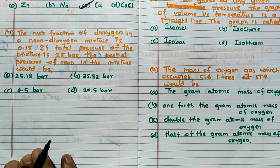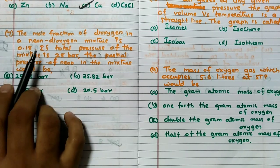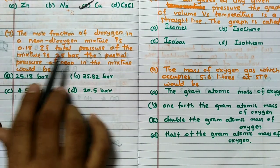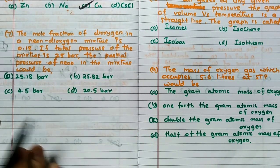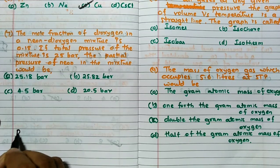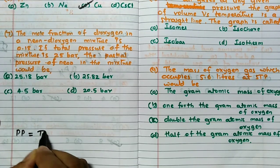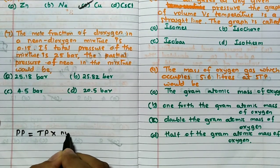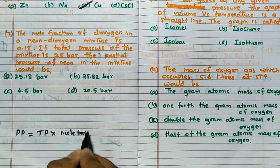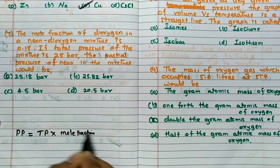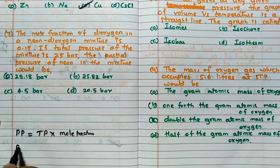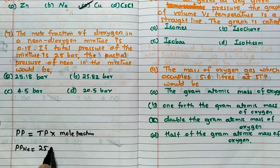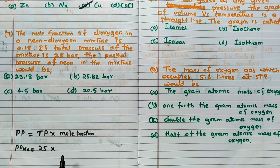Now, the mole fraction of dioxygen in a neon-dioxygen mixture is given. If total pressure of the mixture is 25, the partial pressure of the neon in the mixture would be - remember, partial pressure can be calculated as total pressure into mole fraction. Which you want to calculate, that mole fraction you have to consider. They are asking partial pressure of neon, then total pressure is given 25 into mole fraction of neon you have to calculate.